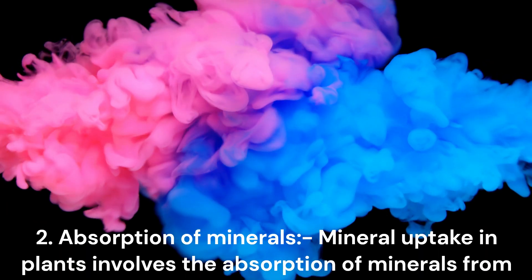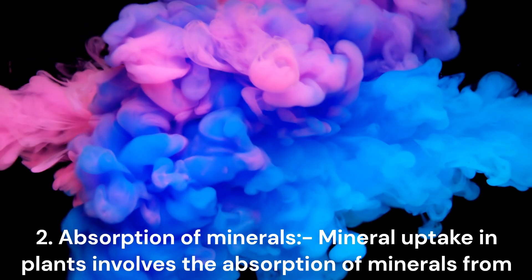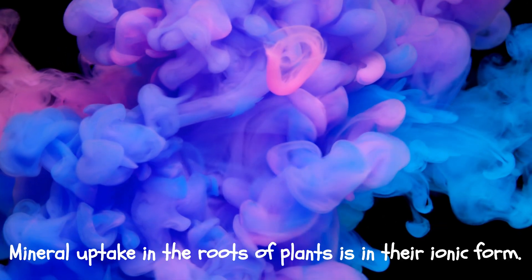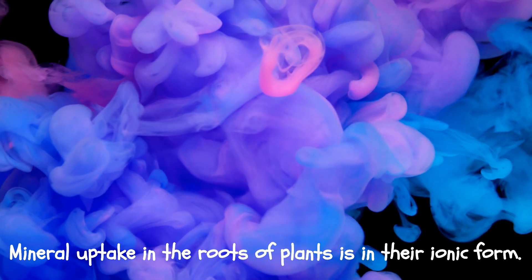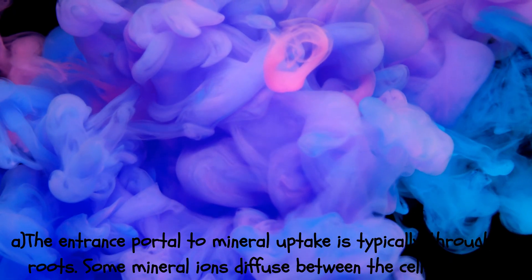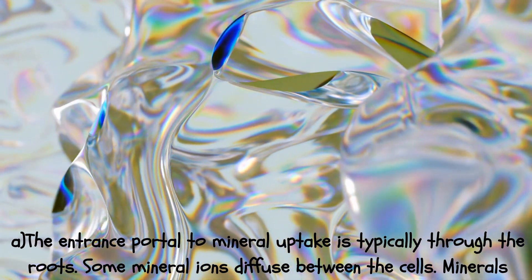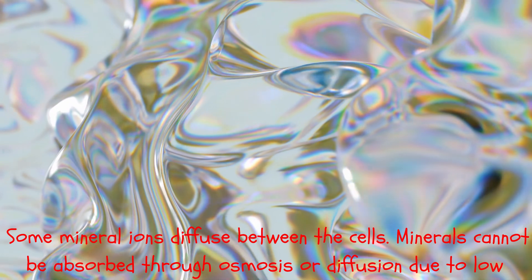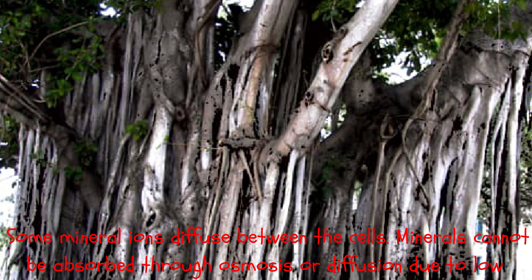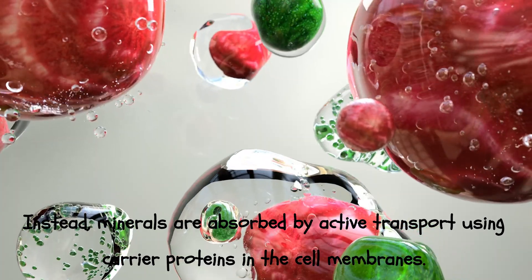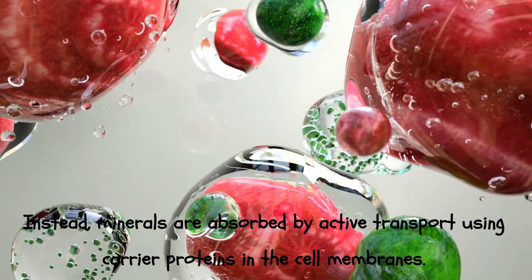2. Absorption of Minerals. Mineral uptake in plants involves the absorption of minerals from the soil in both active and passive processes. Mineral uptake in the roots of plants is in their ionic form. The entrance portal to mineral uptake is typically through the roots. Some mineral ions diffuse between the cells. Minerals cannot be absorbed through osmosis or diffusion due to low concentrations. Instead, minerals are absorbed by active transport using carrier proteins in the cell membranes.